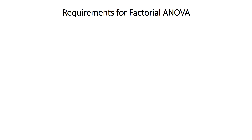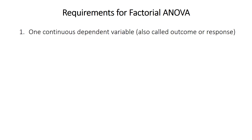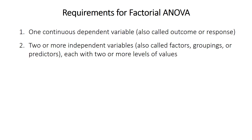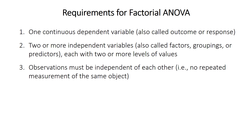For factorial ANOVA, first you need one continuous dependent variable, also called the outcome or response — you want to know if this variable differs significantly among all the groups. Second, you need two or more independent variables, also called factors, groupings, or predictors. These should be categorical and not continuous, and should have two or more levels each. Third, the observations must be independent, meaning you shouldn't have repeated measurements on the same objects. If you do, you'll need a repeated measures ANOVA, which isn't covered in this video.